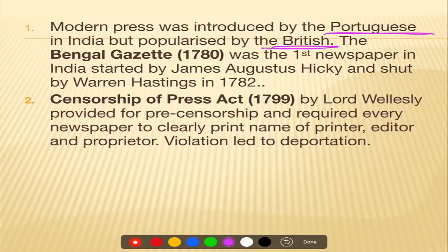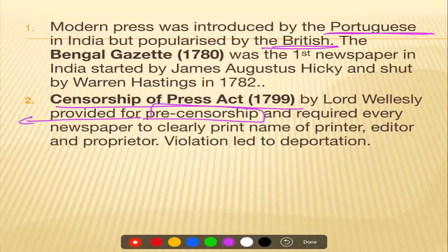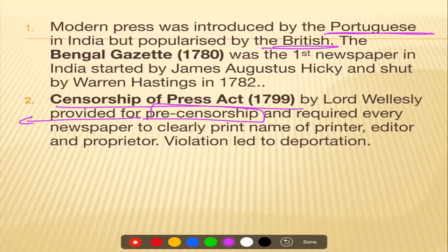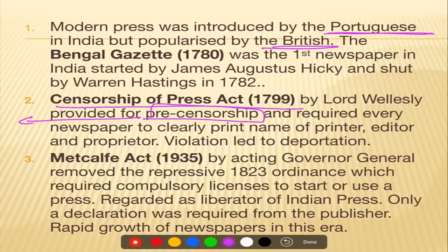The Bengal Gazette was introduced on 29th January 1780. Hickey was extremely critical of Warren Hastings's government, and Warren Hastings stopped its publication in 1782. The second important act is the Censorship of Press Act of 1799 under Lord Wellesley, which provided for pre-censorship — meaning that whatever material you wanted to publish had to be approved beforehand.